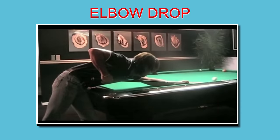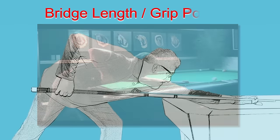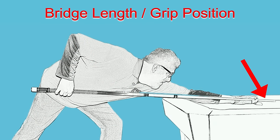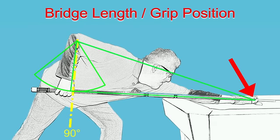In general, shots struck softly are best executed with a shorter bridge. Your own personal shot triangle, the distance from your bridge to grip, does not change for any shot.